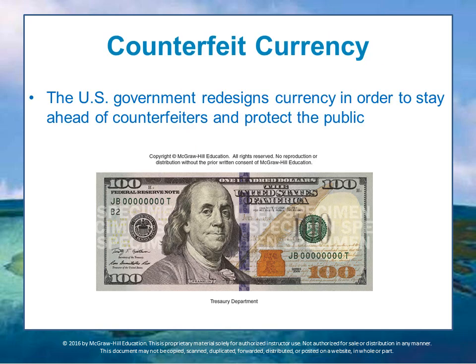The U.S. government redesigns its currency periodically to stay ahead of counterfeiters, which is getting more and more difficult with high-resolution printers. Things like security features added to the paper, holograms, and the like are used. Around 75% of counterfeit currency is found and destroyed before it ever reaches the public. The Secret Service in the U.S. tracks counterfeit currency, and they generally do a very good job of it.